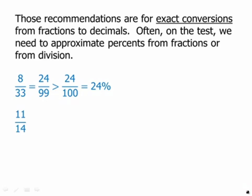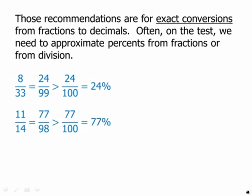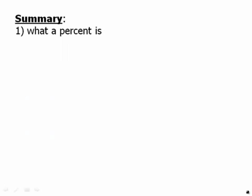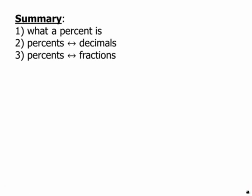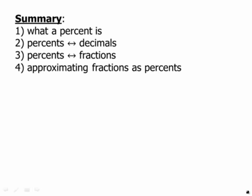Eleven over fourteen: we can multiply the numerator and denominator by seven to get seventy-seven over ninety-eight, which is going to be slightly larger than seventy-seven over one hundred, which is seventy-seven percent. So eleven over fourteen is something slightly larger than seventy-seven percent — an excellent approximation. In summary, we talked about what a percent is, changing between percents and decimals, changing back and forth between percents and fractions, and the very important topic of approximating fractions as percents.